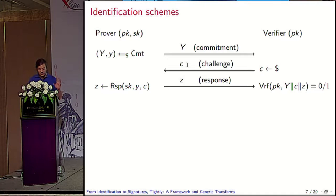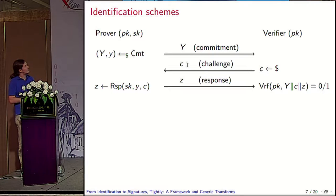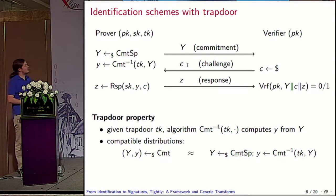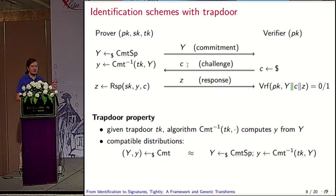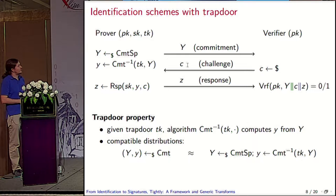We want to look at identification schemes with trapdoor. Currently the commitment and the local state are jointly sampled. In a trapdoor identification scheme, this is replaced: the one algorithm is replaced by two. The first one just samples the commitment from the commitment space. Then, given some trapdoor with a special algorithm, one can compute the local state from the commitment — only the prover can do it because only the prover has TK. Imagine SK and TK being the same thing: the identification secret key. What we want from the trapdoor property is correctness as before, but also that the Y values generated in this new method have the same distribution as the old ones.